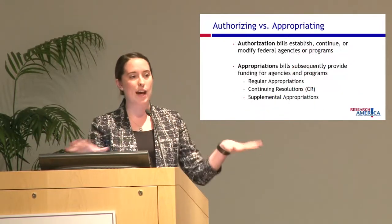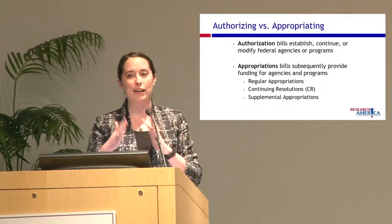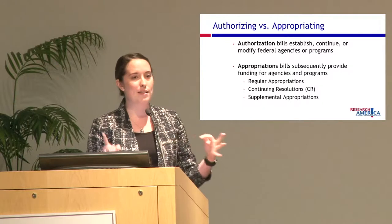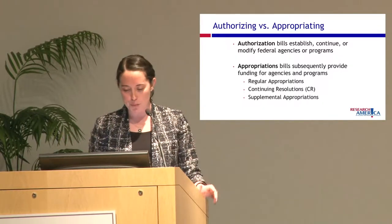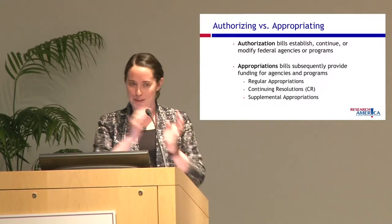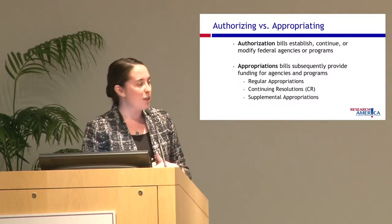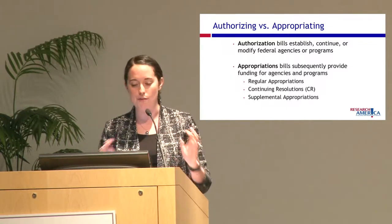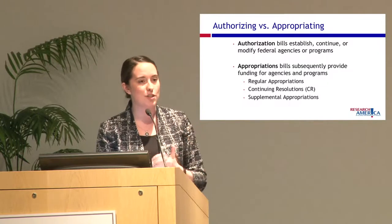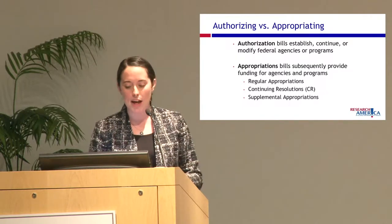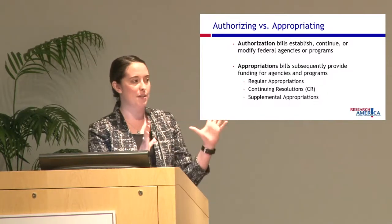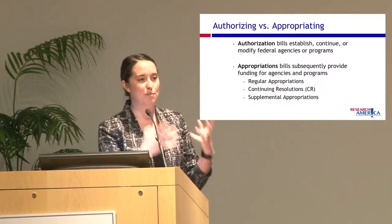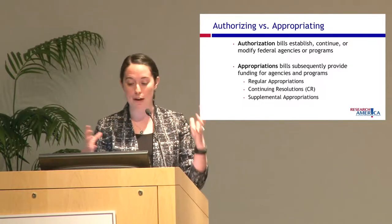Congress every year takes a look at the discretionary portion and decides how to allocate funding to all priorities — education, defense, research among them. Authorization bills are what create programs and set up new federal agencies, allowing them to exist. The appropriations process is what actually writes them a check so they can spend money and have funding to dole out for their priorities.